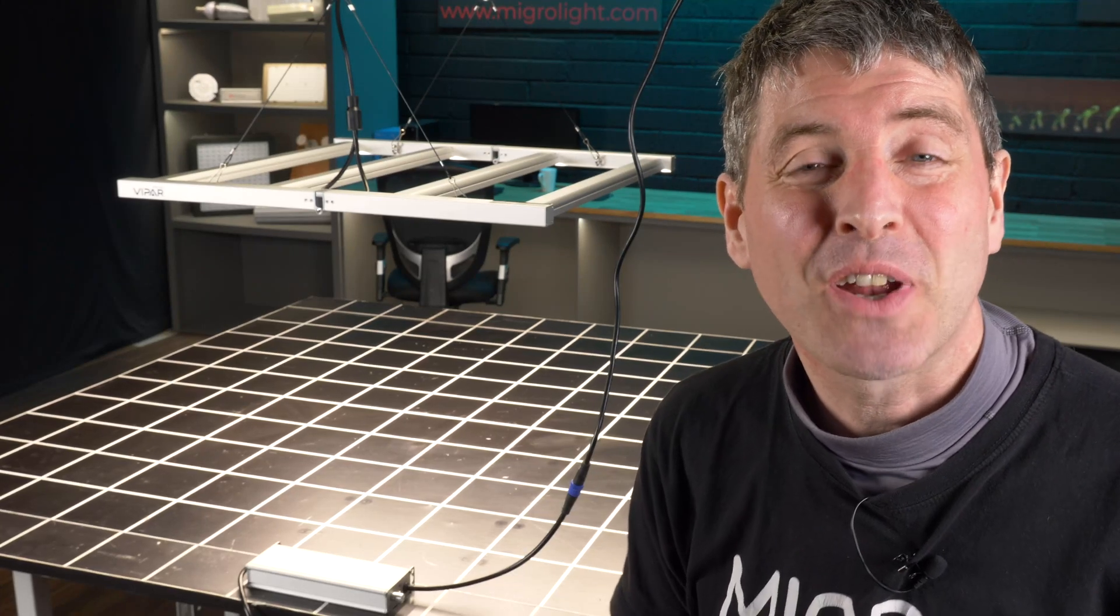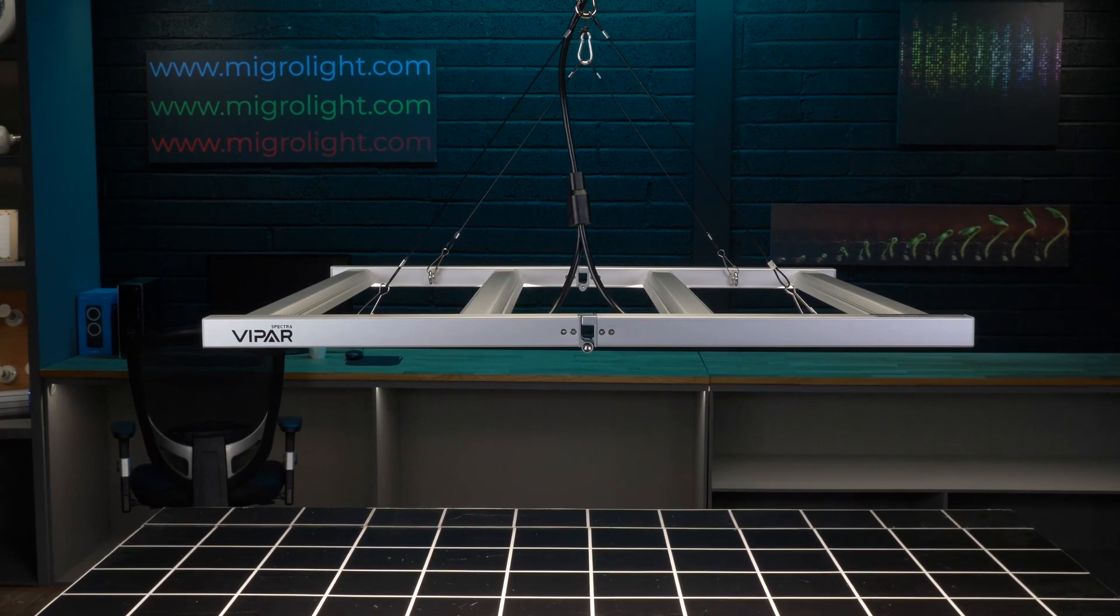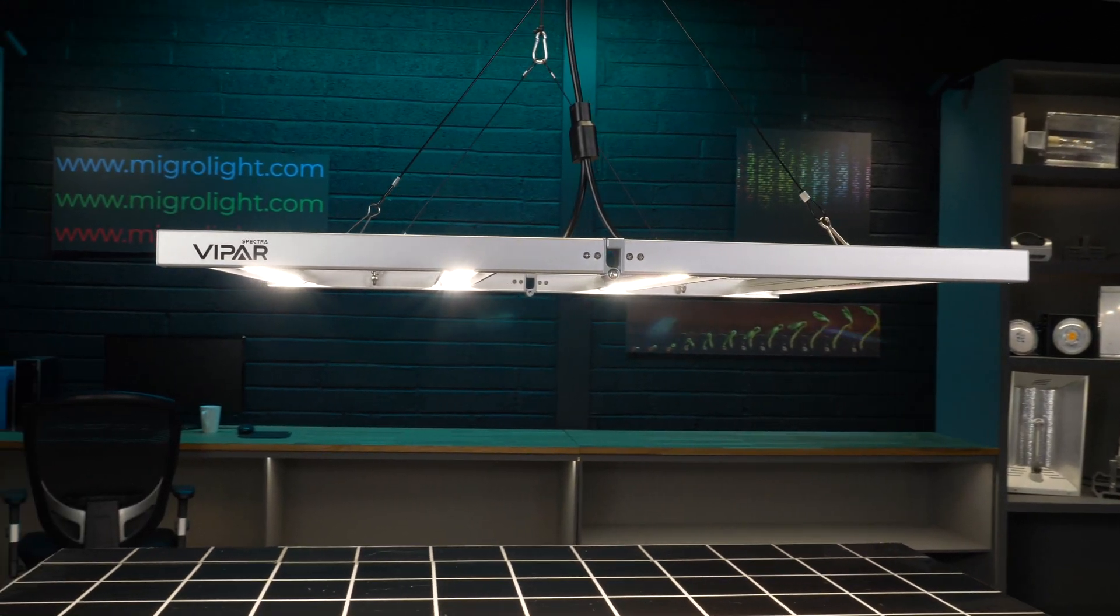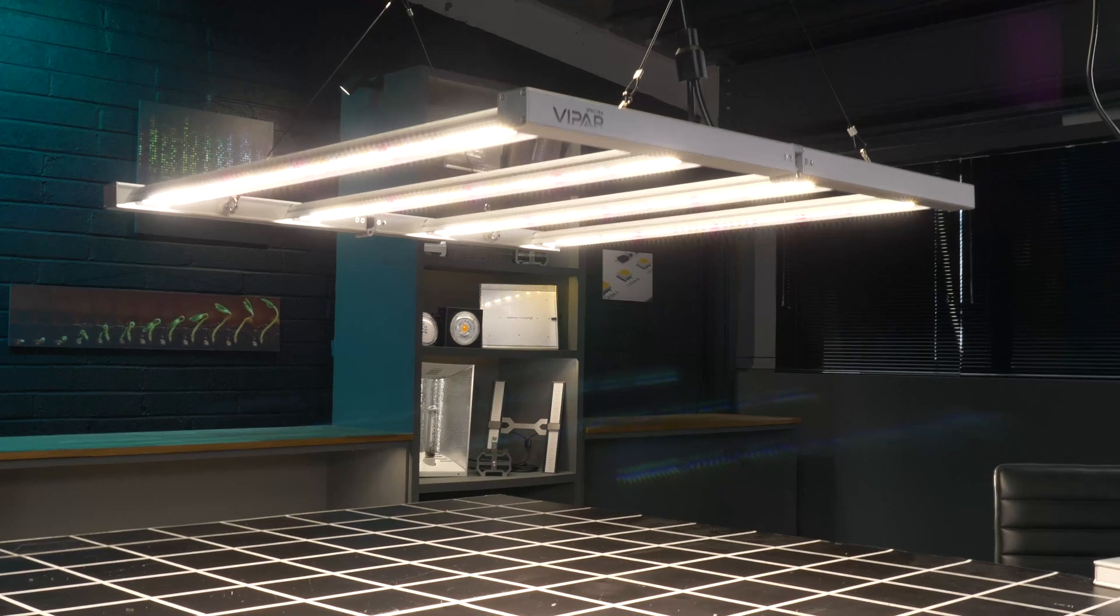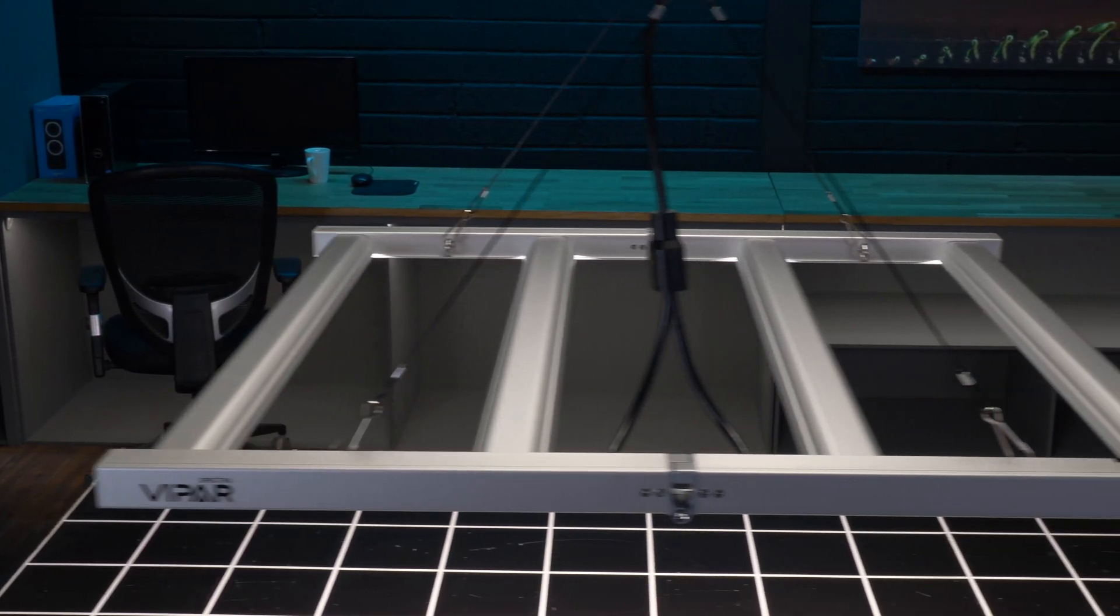Hey there guys, welcome back to the Migro YouTube channel. We've got the Viper Spectra KS3000 to review today. It's slightly unusual because it's suited for a 3 foot by 3 foot or 90 cm by 90 cm grow area.